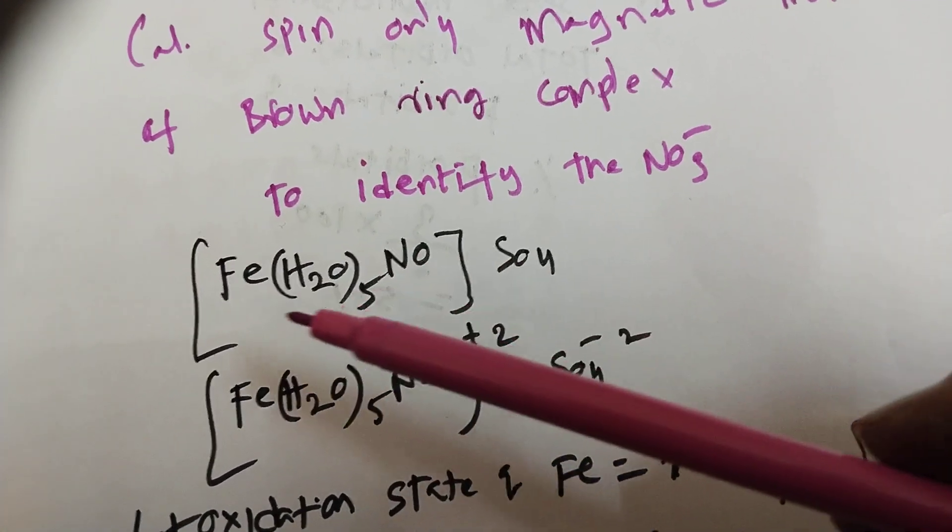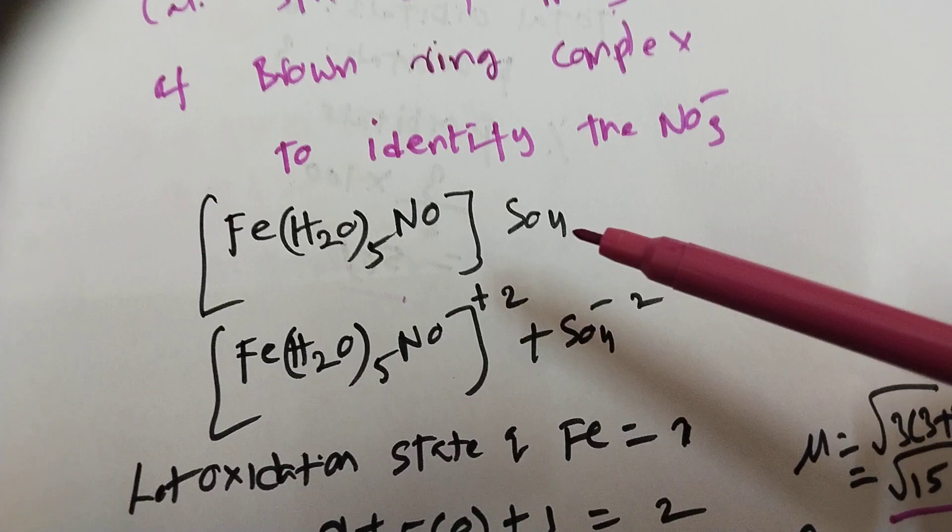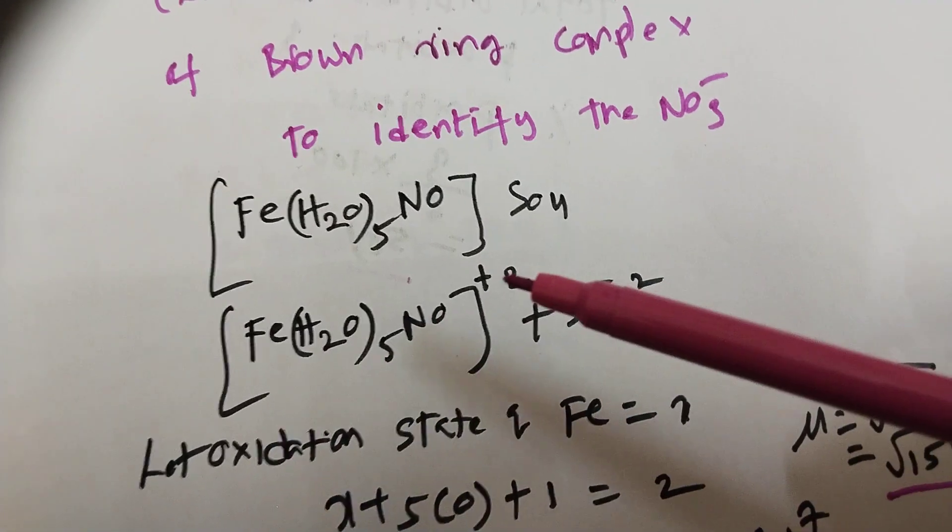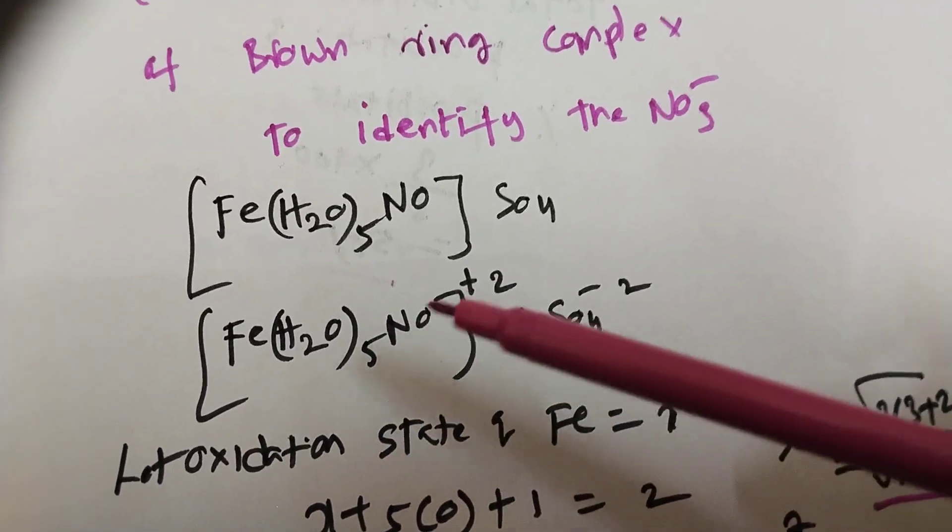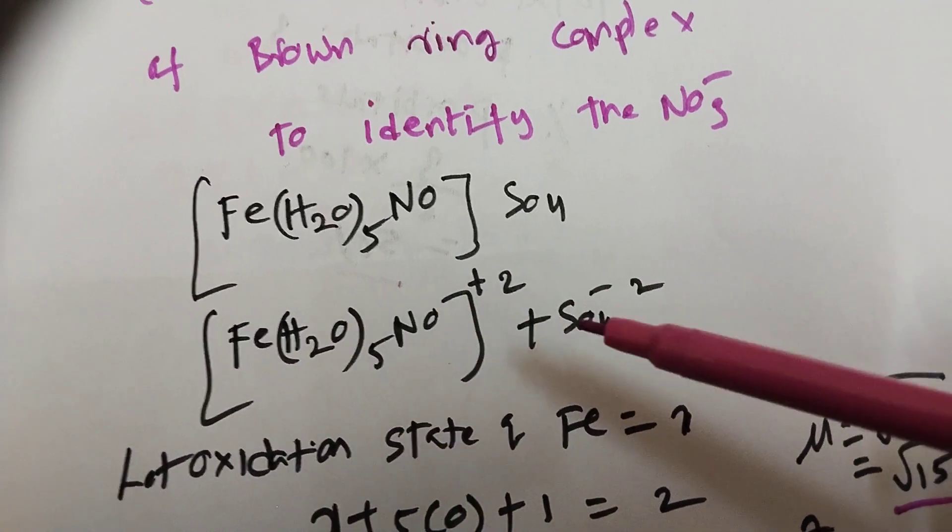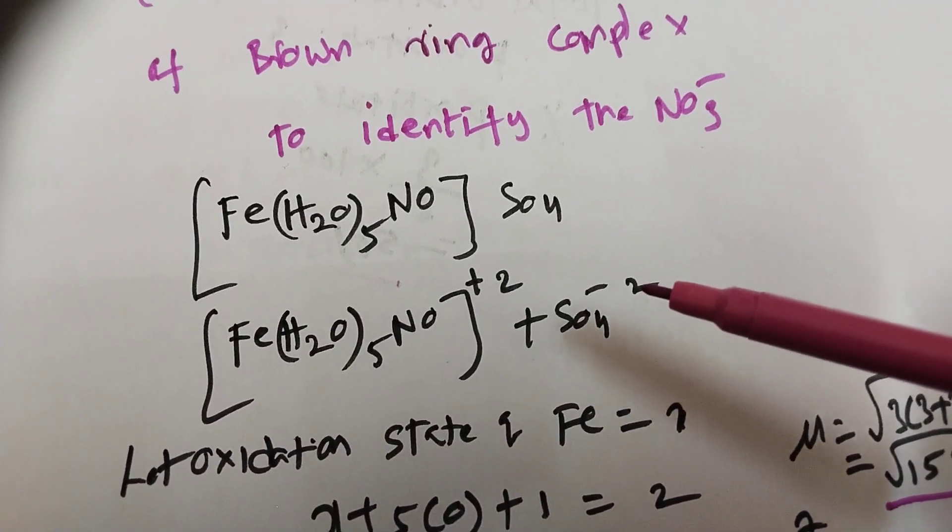Fe(H2O)5NOSO4, nitrosyl ferrosulfate. This is the formula. Now when we dissociate in water, what happens?